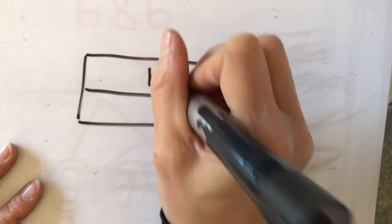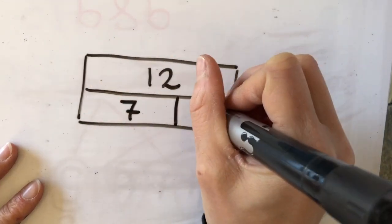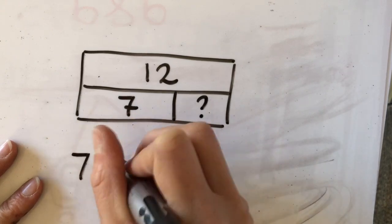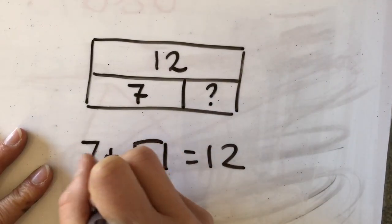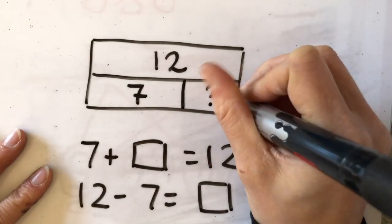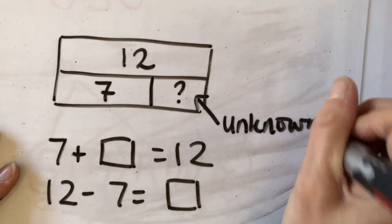However, if I know that this is 12 and that this is 7 but I don't know this one, then I've got 7 add something gives me 12, or I've got 12 take away 7 gives me something. And this here is my unknown change.